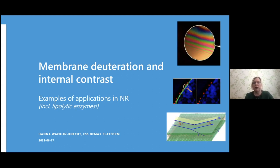NMR and neutron reflectometry are very complementary in the sense that they both give information about this environment, but the nature of the information is very different. Neutrons can scatter from inside the membrane because of their properties. This can also be done by x-rays, but it's the deuteration that gives neutrons the unique power to look at things with internal contrast. That's the main theme of today's talk.